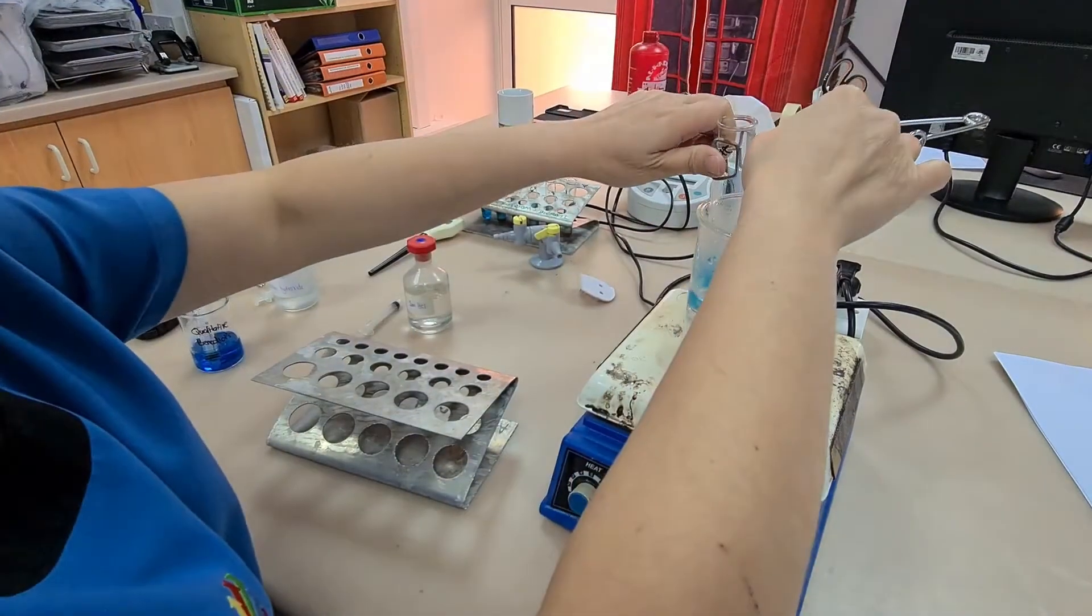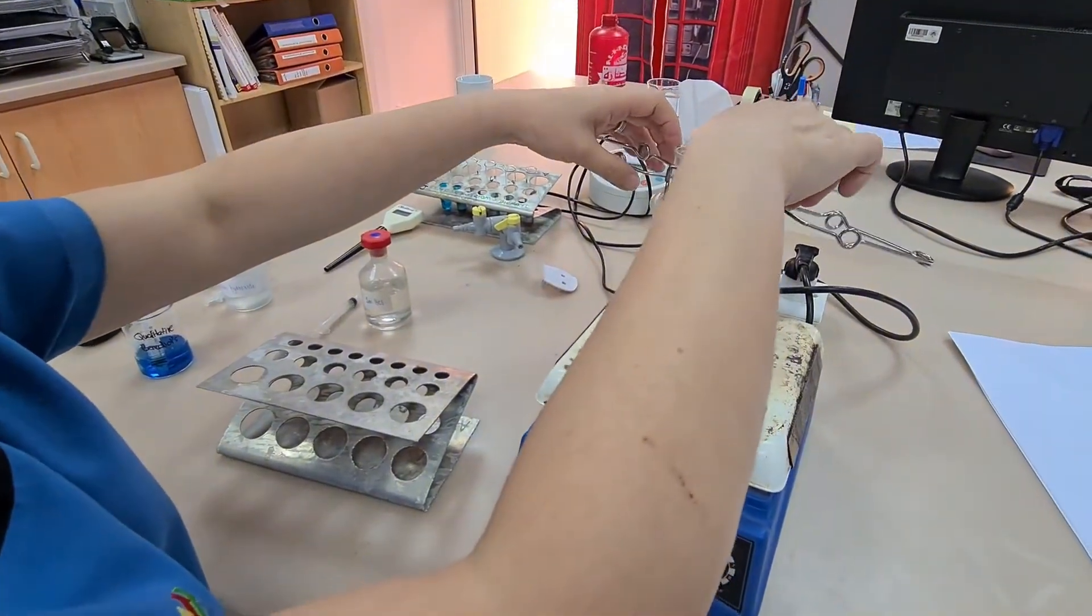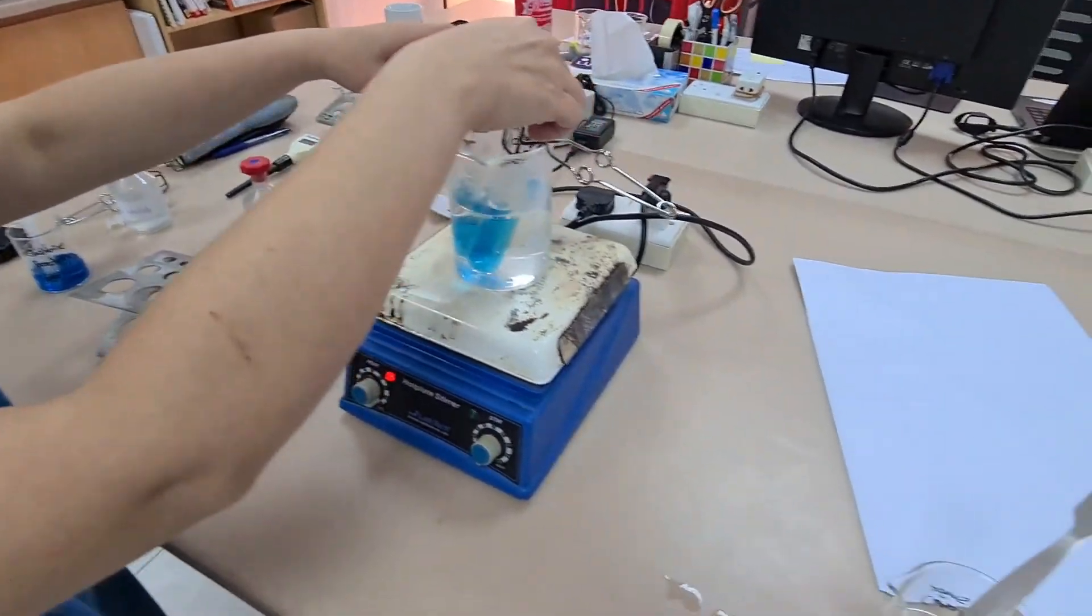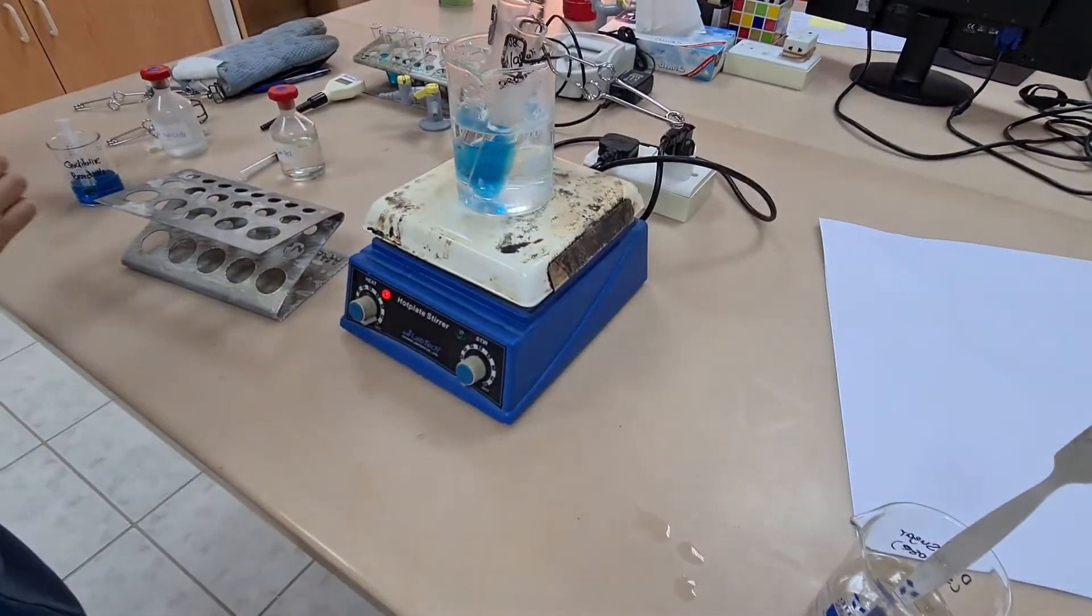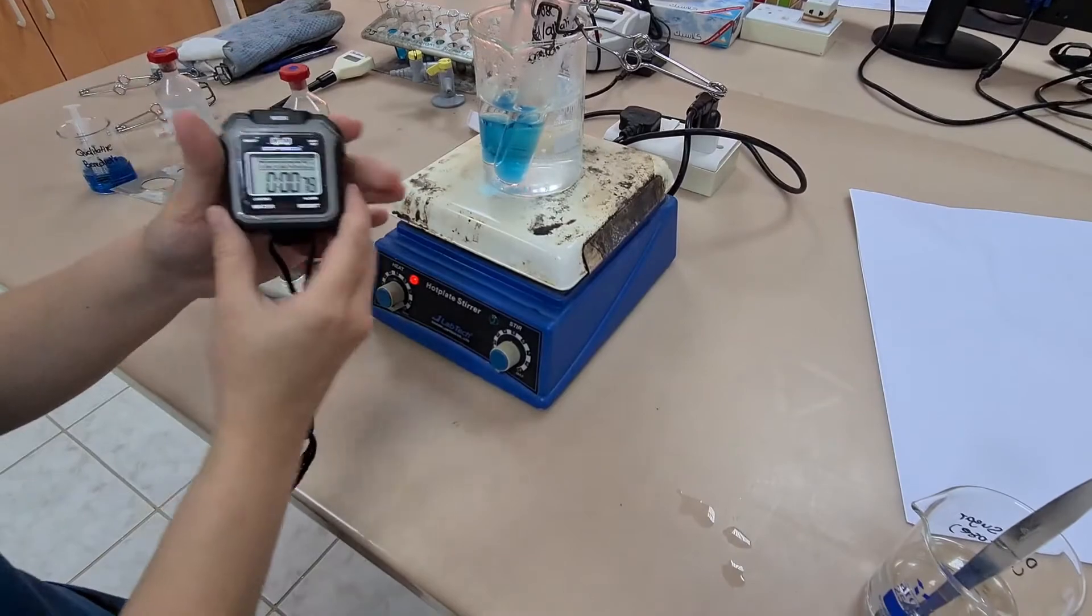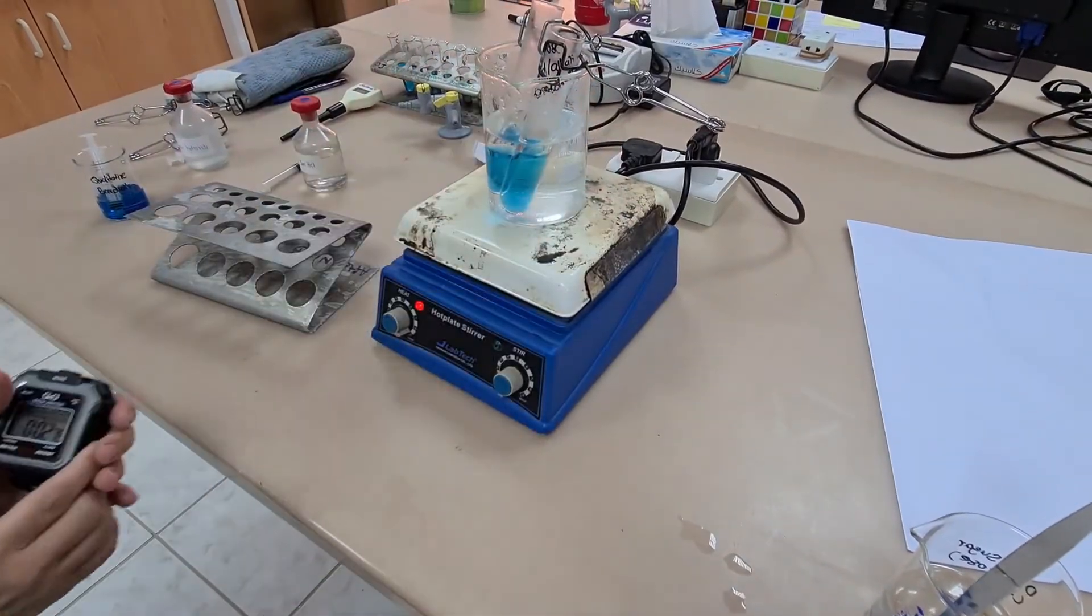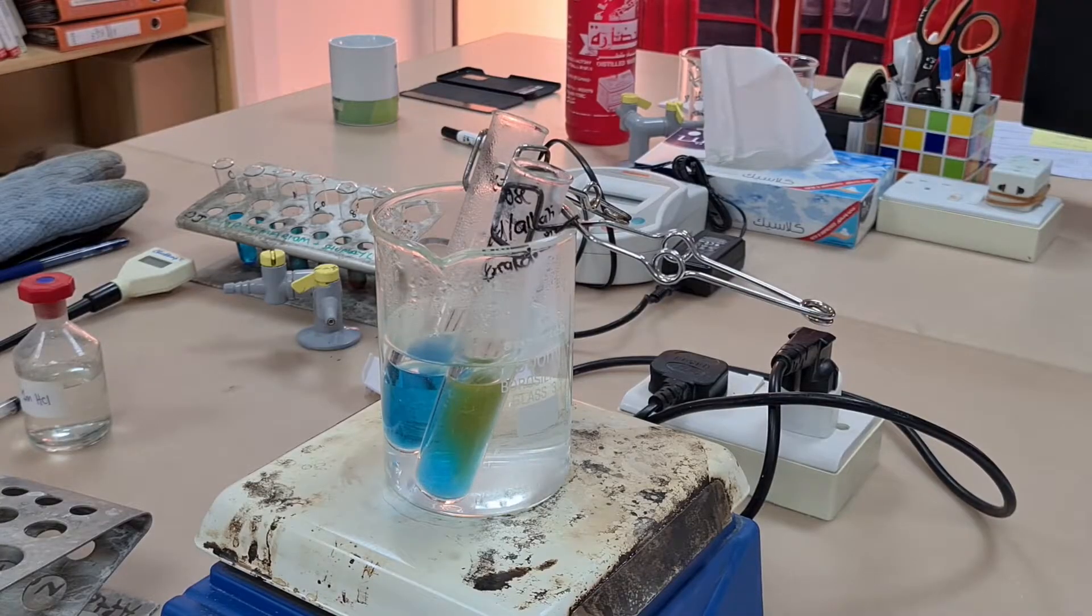So now one of these sucrose solutions has been hydrolyzed with heated acid and the other one remains sucrose solution. They've had the same volume of Benedict's reagent added and we're now going to heat it in a boiling water bath for five minutes.